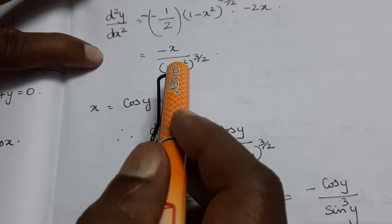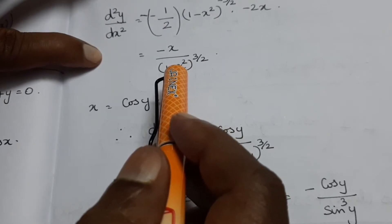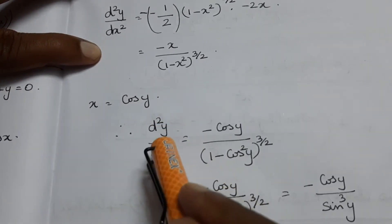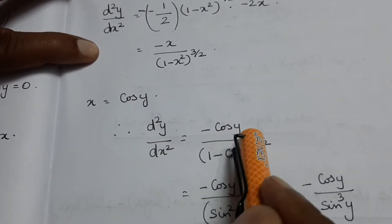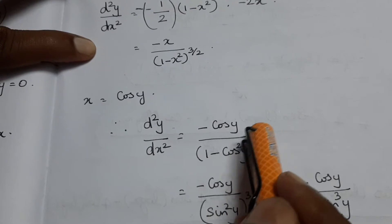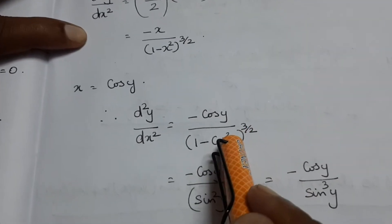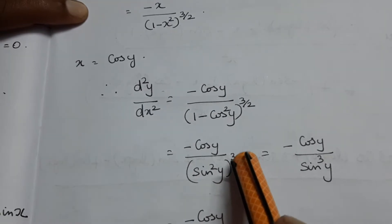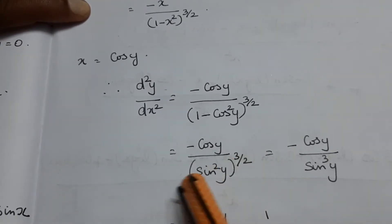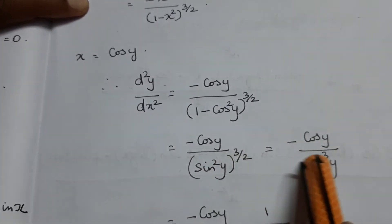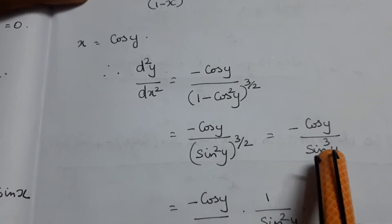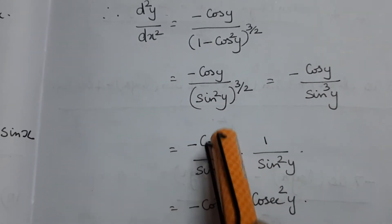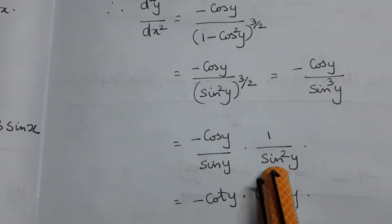Since y equals cos inverse of x, we have x equals cos y, so 1 minus x square equals sin square y. Substituting, d²y/dx² equals minus cos y divided by sin cube y, which simplifies to minus cos y over sin cube y.